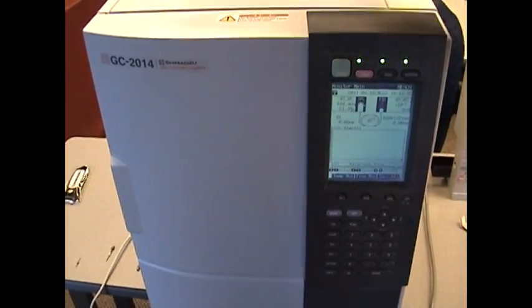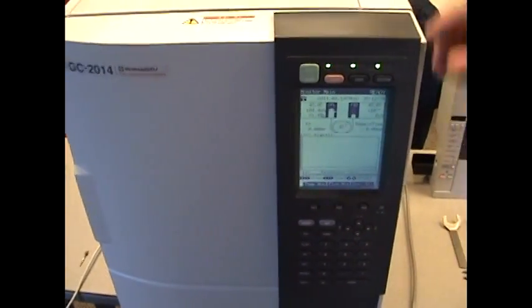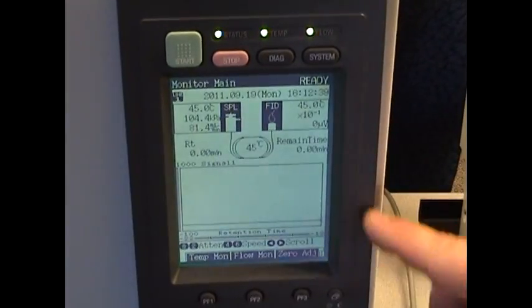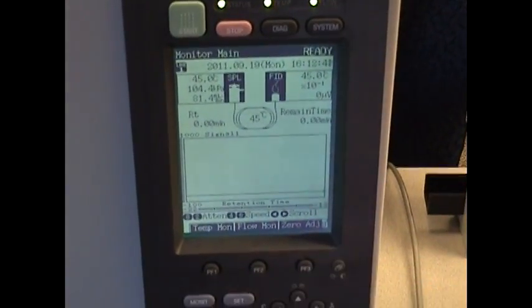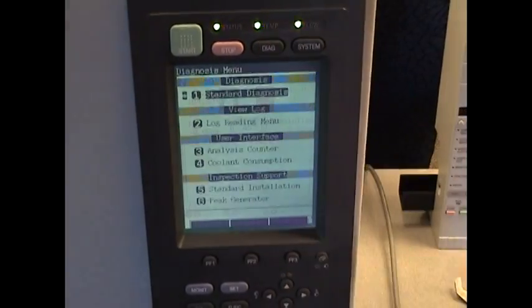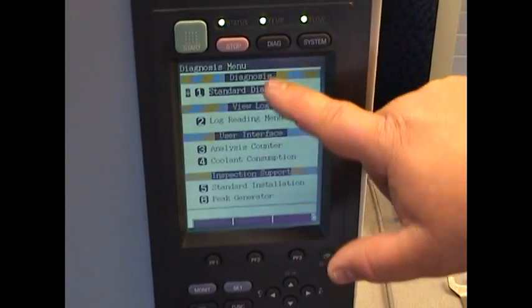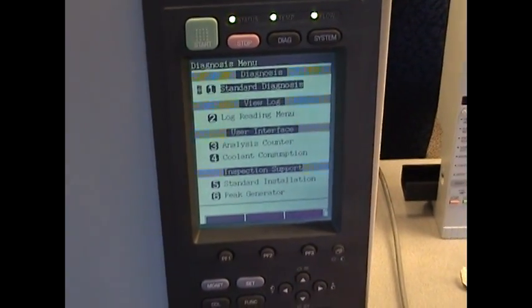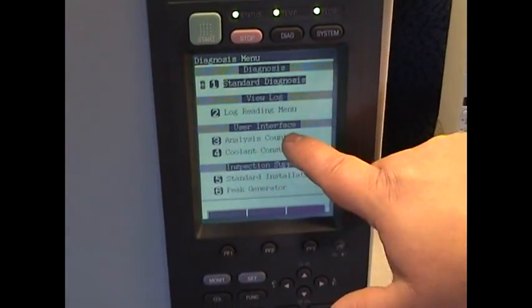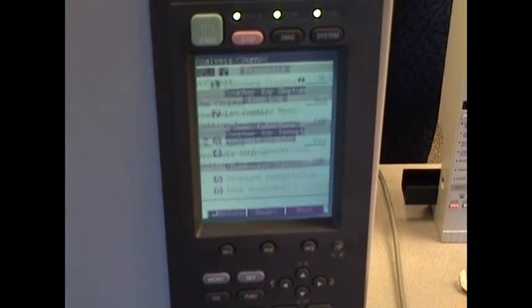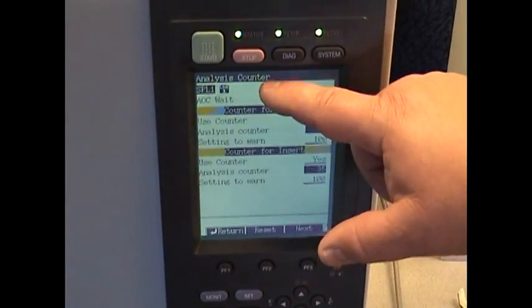Once you go ahead and replace a septa or an injection liner, you go on and reset the instrument on the counter because it has a counter inside. So you get to your main screen, push monitor, push the diag button. That brings you to this screen. Okay, it's diagnosis menu. You can just simply want to go to analysis counter, push three and enter. And that brings you to analysis counter here. Don't worry about the AOC weight.